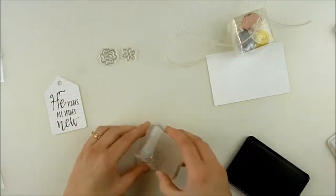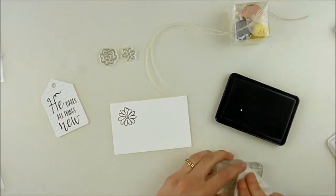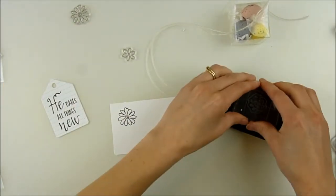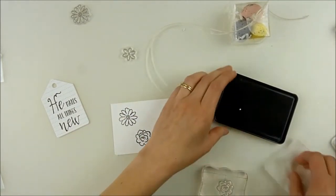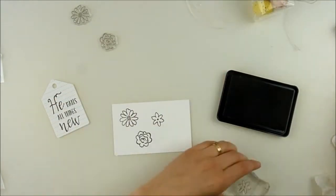If it was too fine, it might be a little hard with the stitched lines through there. It might break up the sentiment, but for this one it worked perfectly. Now I'm going to stamp my flowers again using the Stormy dye ink. It's just a little bit softer than a bold black ink.